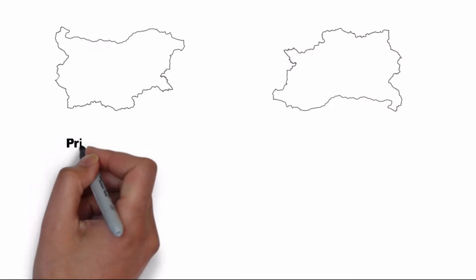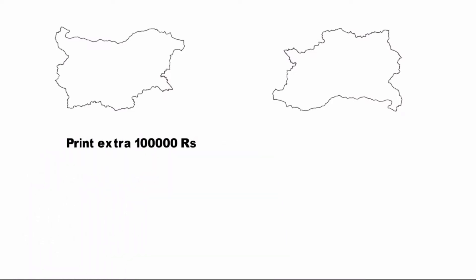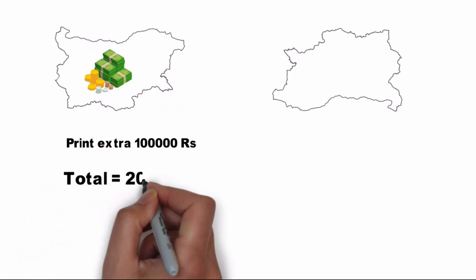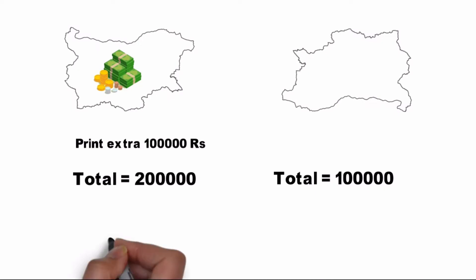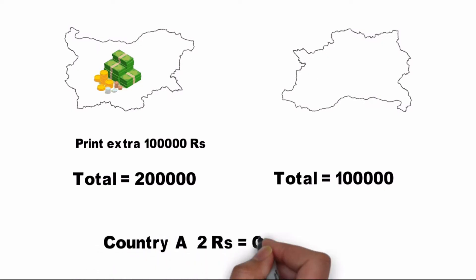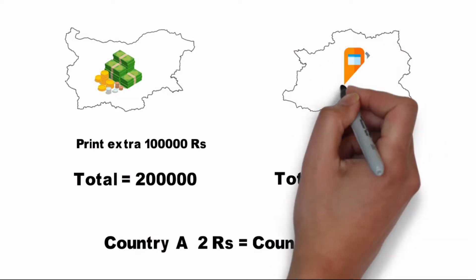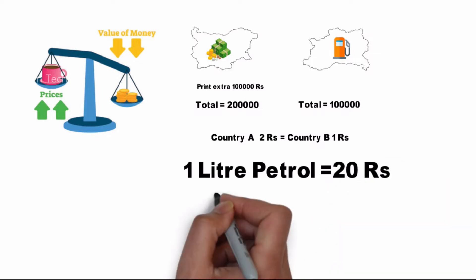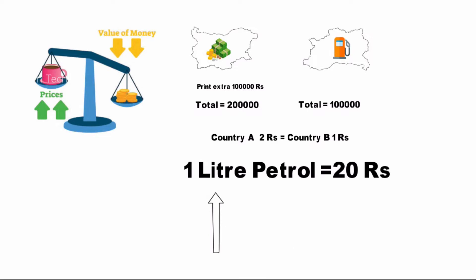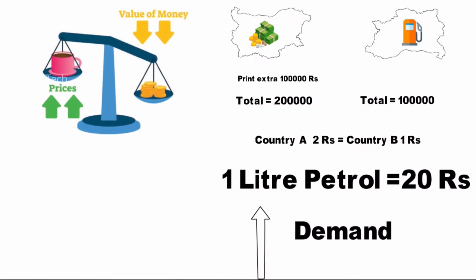Now, when the government doesn't match — country A or country B — there is one entry. So country B is 1. If we are to buy 1, we will buy 2. So let's talk about inflation. What is the situation that is called inflation? Demand and supply are not the same, and the government is not the same.